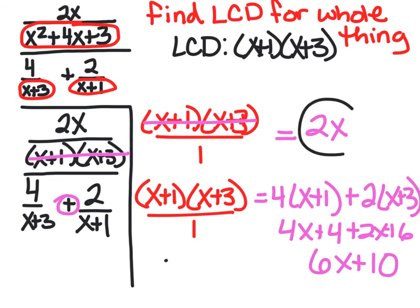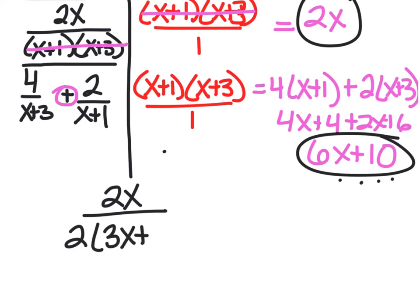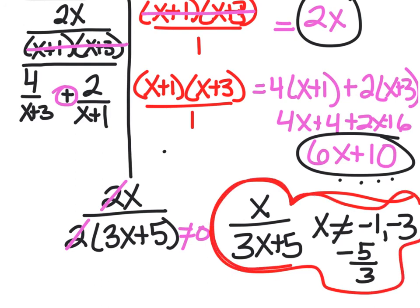So the numerator is 2x and the denominator is 6x plus 10. Factoring 2 out of the denominator gives 2 times 3x plus 5, and the 2s cancel, so the final answer is x over 3x plus 5. As long as x does not equal negative 1 or negative 3 — from the denominators — and also not negative 5 thirds, when we set 3x plus 5 equal to 0.